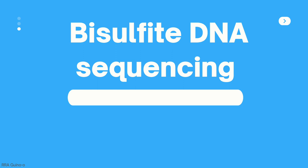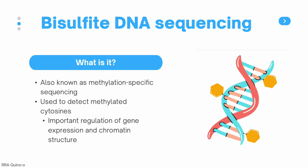Next we have bisulfite DNA sequencing, also known as methylation-specific sequencing, which is used to detect methylated cytosines. These methylated cytosines are an important player in the regulation of gene expression and chromatin structure. Sometimes, although the DNA may not have any mutations, the presence of these different cytosines might still cause some genes to be downregulated or even inactivated.